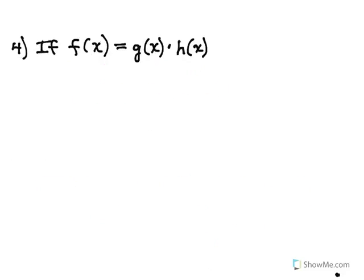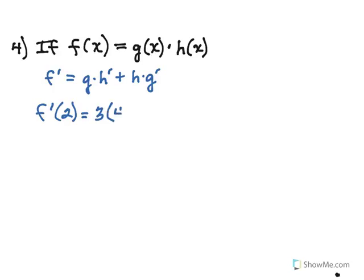Now let's try one using the product rule. In general, f prime is g times h prime plus h times g prime. So f prime of 2 is: g of 2, which is 3, times h prime of 2, which is 4, plus h of 2, which is negative 1, times g prime of 2, which is negative 2. Simplifying that gives 14. We're really just using the statements of the product and quotient rules.